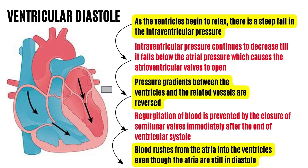Throughout ventricular systole, the atria are in diastole, meaning they are being filled with blood from the great veins. So when the atrioventricular valves open — as intraventricular pressure falls below atrial pressure — blood rushes from the atria into the ventricles even though the atria are still in diastole. Ventricular filling is rapid at first but slows during the later part of ventricular diastole. The next cardiac cycle then begins with the onset of the next atrial systole.